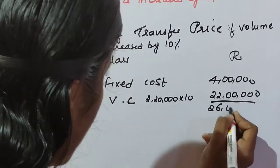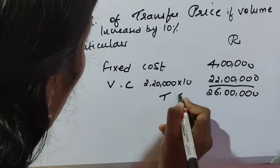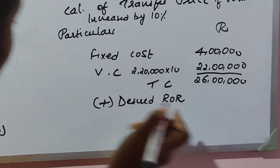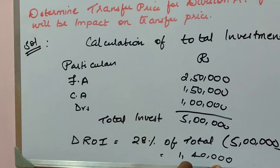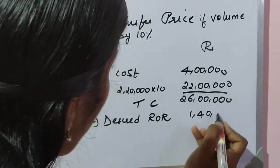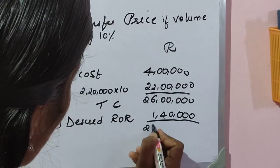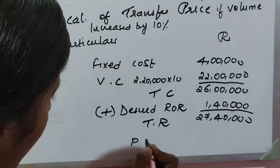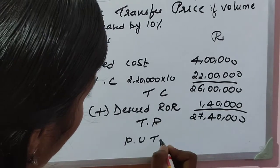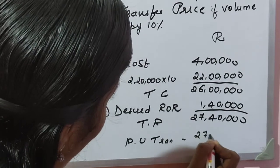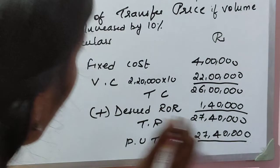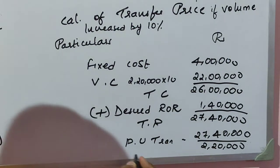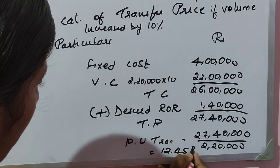Adding fixed and variable costs gives a total cost of ₹26,00,000. We then add the desired rate of return of ₹1,40,000 to get a new total transfer price of ₹27,40,000. Per unit transfer price = ₹27,40,000 ÷ 2,20,000 units = ₹12.45 per unit.